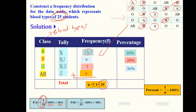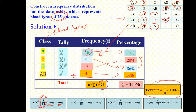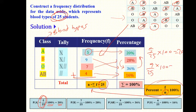The formula is: percentage = frequency (F) divided by total (N), multiplied by 100. This makes a categorical frequency table because we have a qualitative variable, which is blood type.